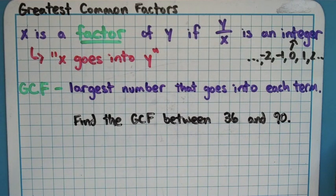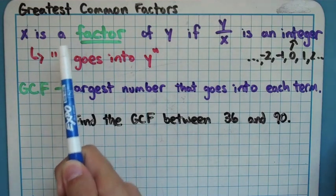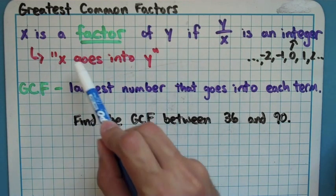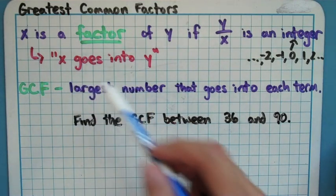Before we talk about what a GCF is though, I want to talk about what just a factor is. I wrote down a little definition here. We would say that x is a factor of y if when you do y divided by x, you get an integer answer. Integer being a positive negative whole number. So basically when we divide these numbers here, we're getting a whole number answer. So we would say for example, 2 is a factor of 10, because 10 divided by 2 is 5, and 5 is an integer. Another way to think about it is that x goes into y, 2 goes into 10.